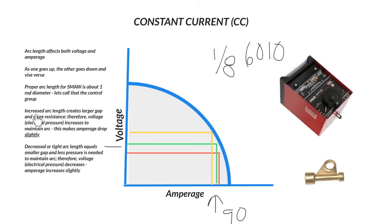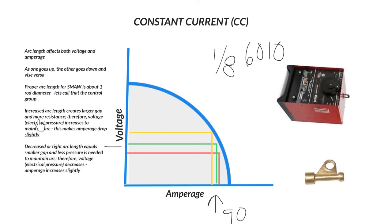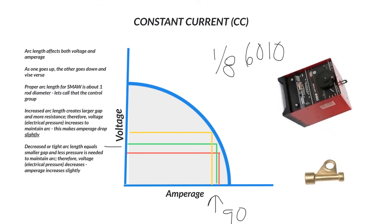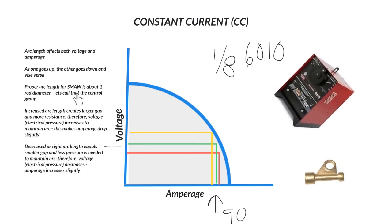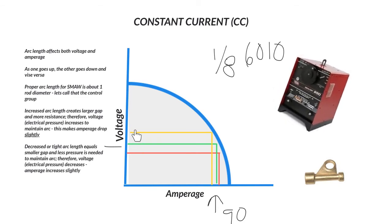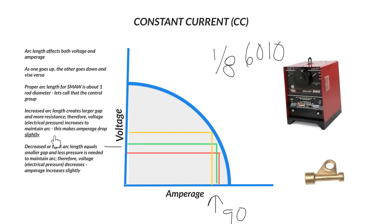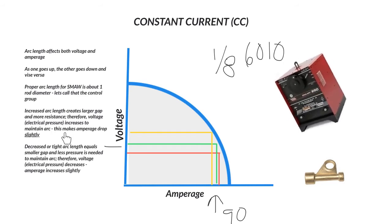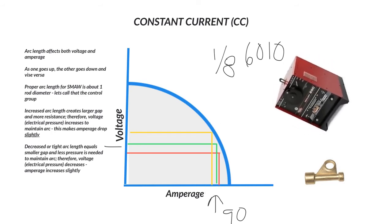So what's going to happen is if we increase the arc length, it's going to create a larger gap and more resistance. Therefore, the voltage or electrical pressure is going to have to go up. So we're here, voltage goes up, which means the voltage goes up to maintain the arc, which actually just means that your amperage is going to drop.